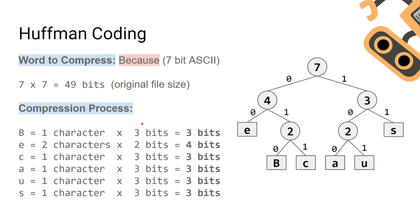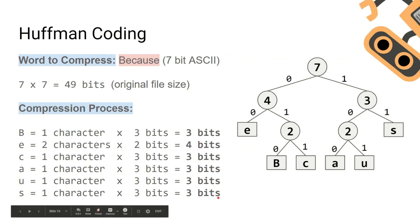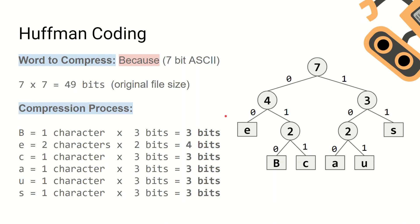There are two E's in the word 'because', each now represented with two bits of binary, which means we're using a total of four bits to represent all of the E's. You then repeat this process for all of the characters in the word 'because'. Adding all of the bits together gives us 18 bits when the file is compressed. So the word 'because' compressed using a Huffman tree is now represented using 18 bits of binary.